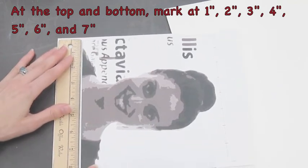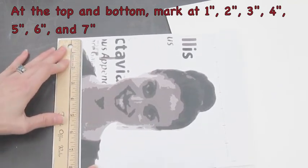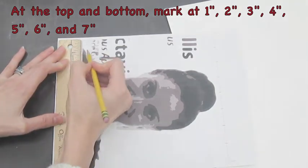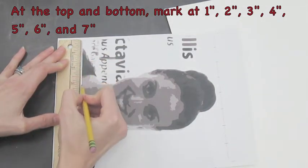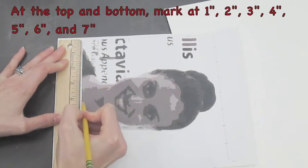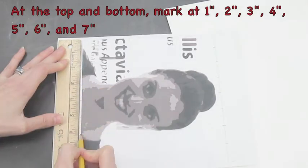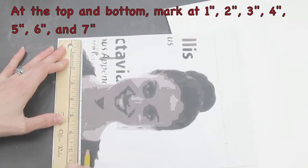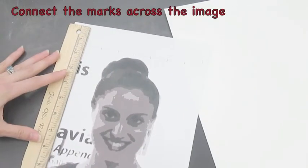Now, you need to repeat the same thing on the bottom of the image. Make sure 0 is on the edge and mark at 1, 2, 3, 4, 5, 6, and 7 inches. Once again, you don't have to mark at 0 or 8.